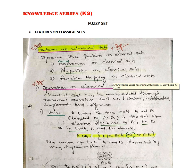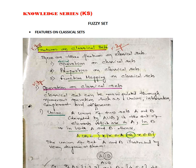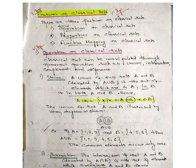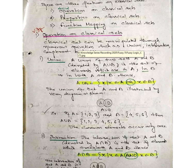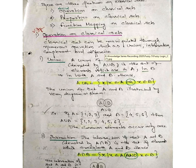We are going to see these three features — operation, properties, and function mapping in this discussion. If you see the operations of a Classical Set, a Classical Set can be manipulated through numerous operations such as union, intersection, complement, and difference.